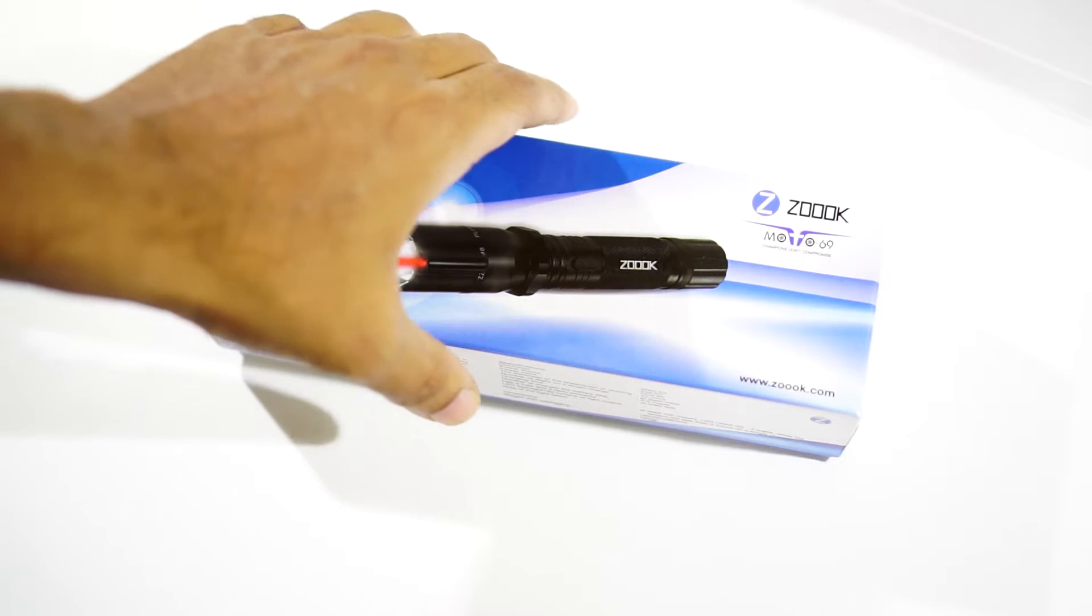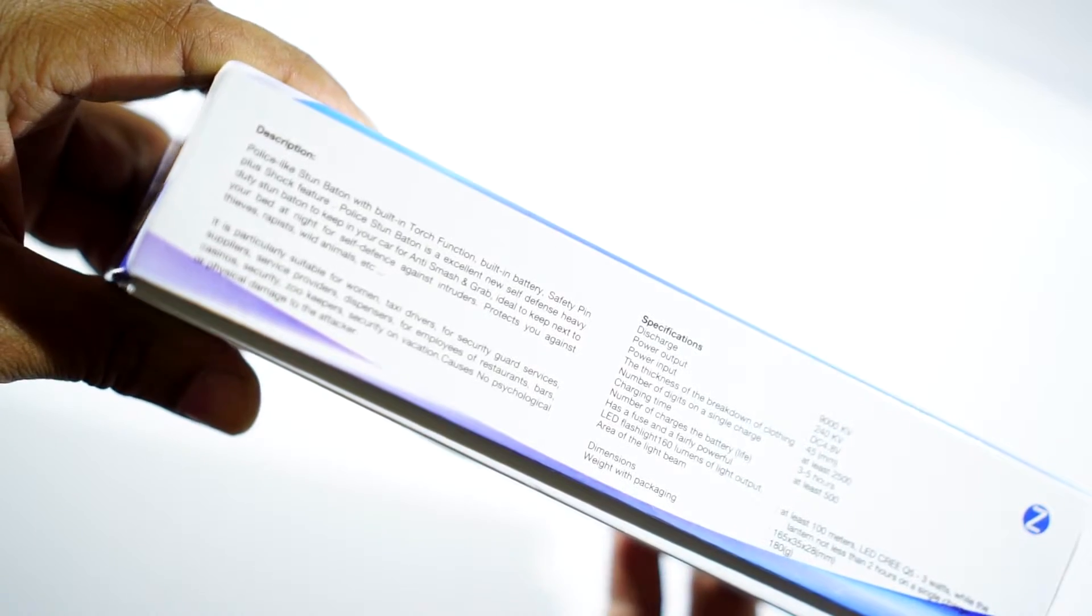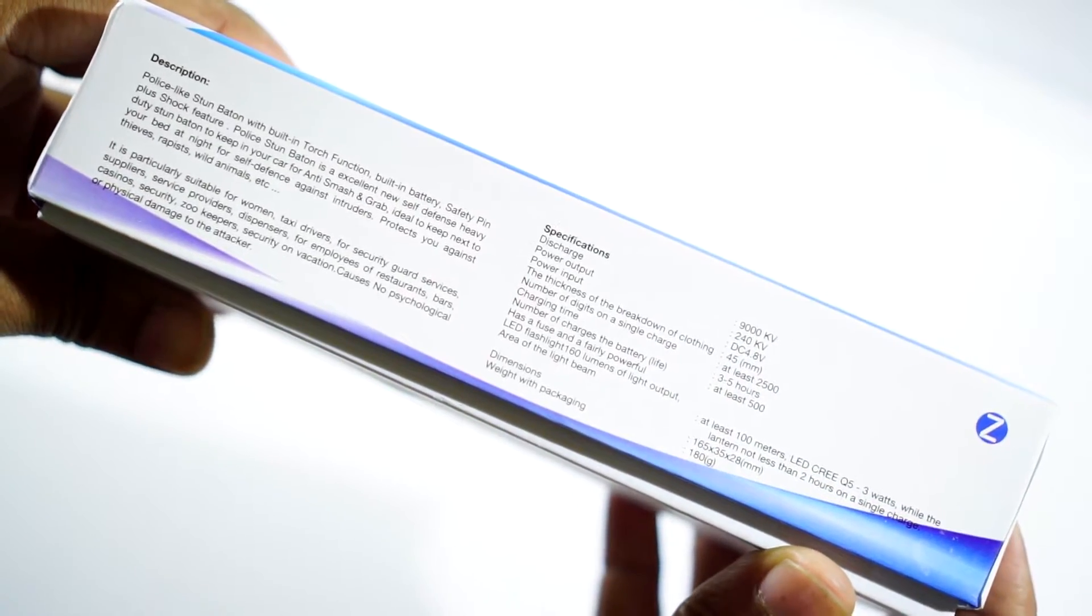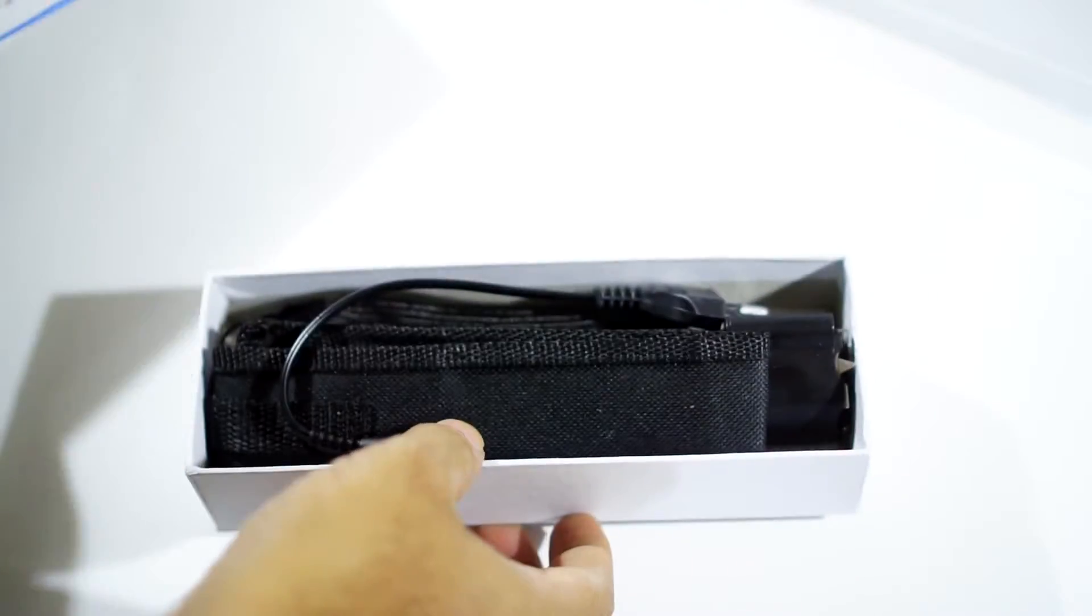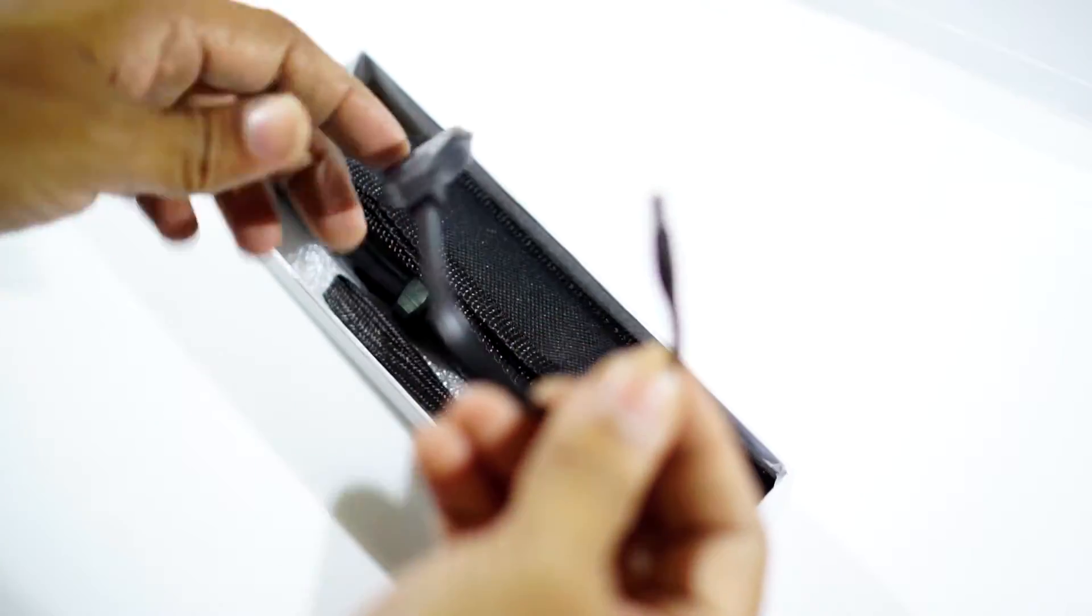Here is the box. It looks pretty simple and straightforward with all the product information on it. Opening the box, the first thing you'll see is this proprietary charging cable, and then you have this pouch.